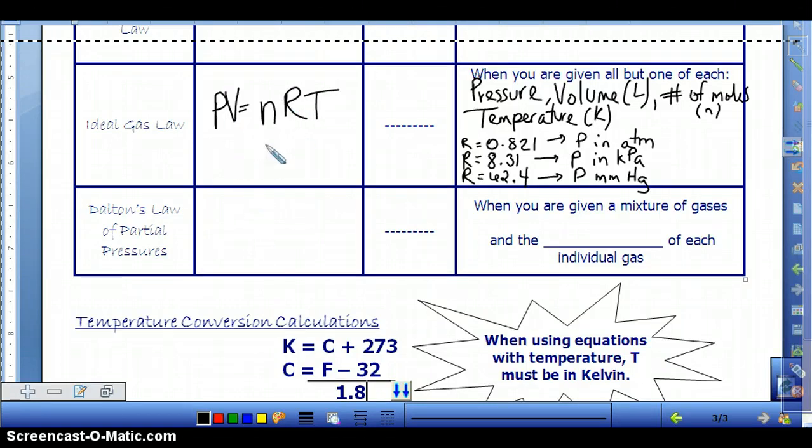The last law is called Dalton's law of partial pressures. And it simply says that the total pressure of a mixture of gases is equal to the sum of all the partial pressures. So you simply just add all your pressures up to get the total. And what you'd write in here is when you're given a mixture of gases and the partial pressure of each individual gas.